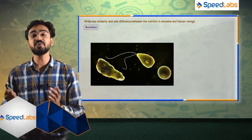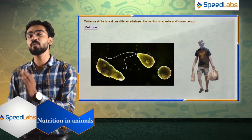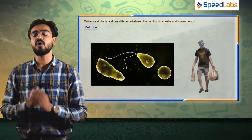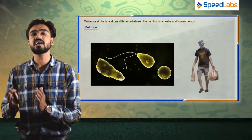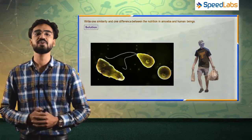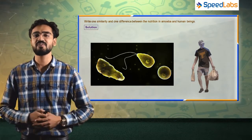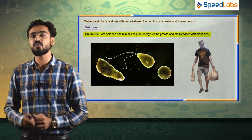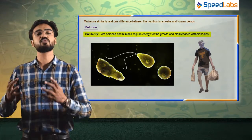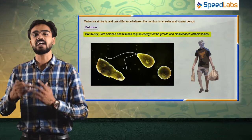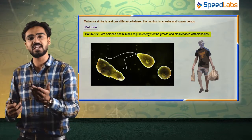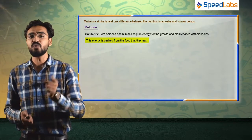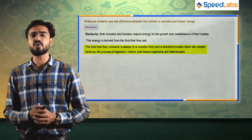Amoeba is a unicellular species while human beings are multicellular species. We have to comment on their similarity and differences in terms of nutrition — how they take nutrition. Firstly, the similarity: both amoeba and humans require energy for the growth and maintenance of their body. Amoeba also takes food for growth and maintenance of the body. This energy is derived from the food they eat, and the food they consume is always in a complex form.